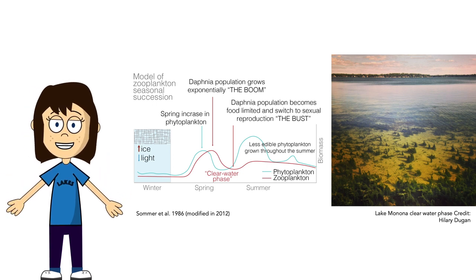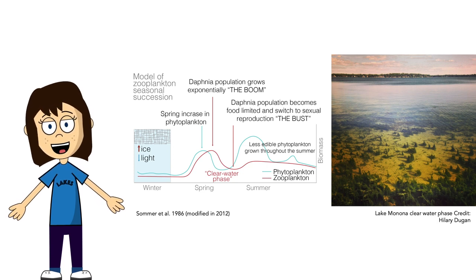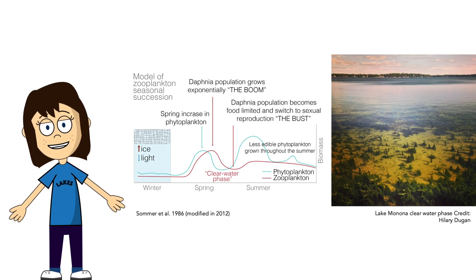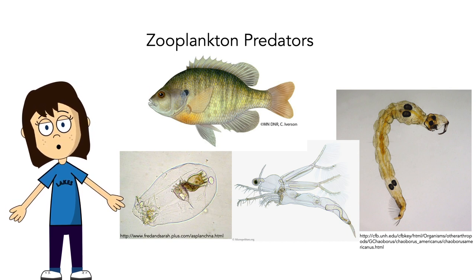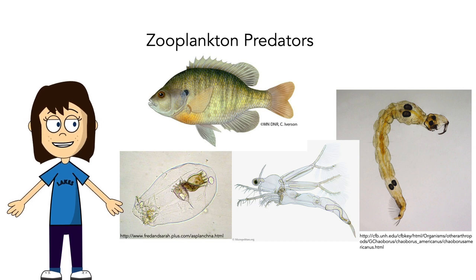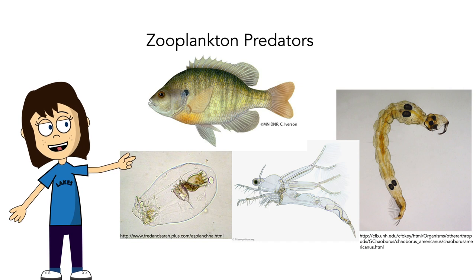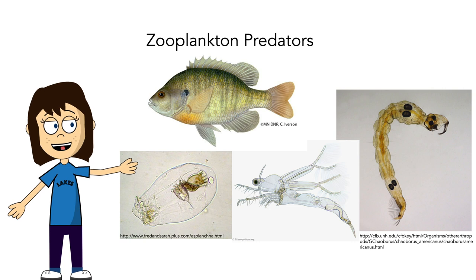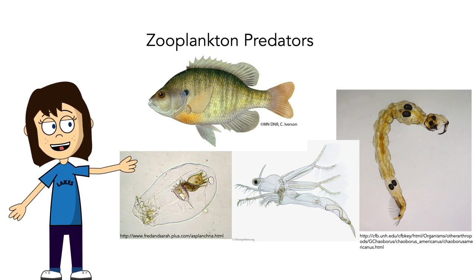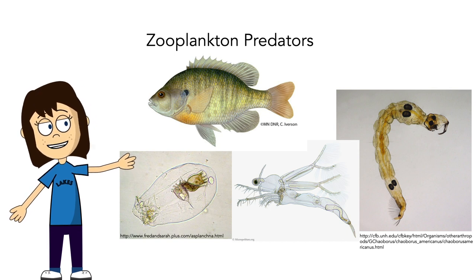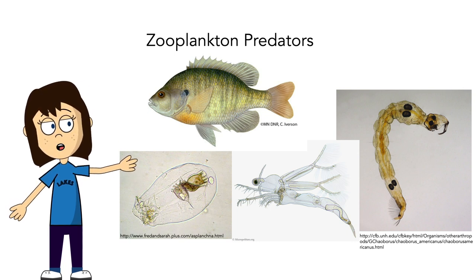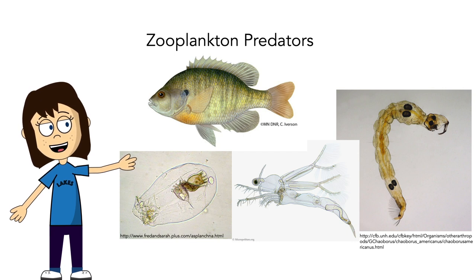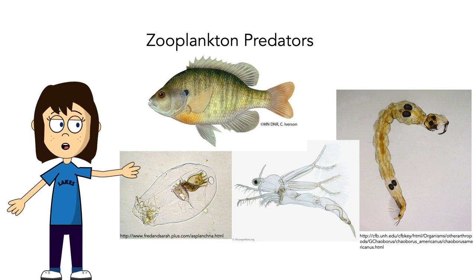Unfortunately, the clear water doesn't last all that long, because at the same time that zooplankton are eating all of the phytoplankton, those high population numbers can't be sustained because there's also predation on zooplankton. Common predators include bluegill — a common fish in the Madison lakes that really likes to eat zooplankton. We also have predatory zooplankton: rotifers that eat other rotifers, Leptodora that eat a range of zooplankton including rotifers and Daphnia, and the predatory larvae of the phantom midge Chaoborus, often considered a key factor for zooplankton community structure.